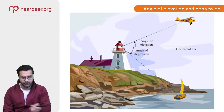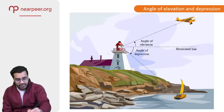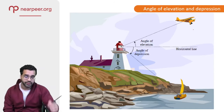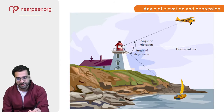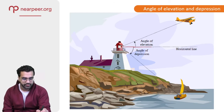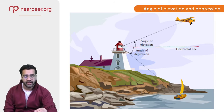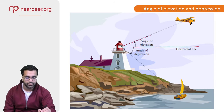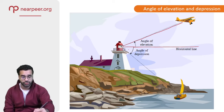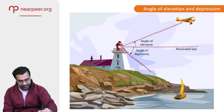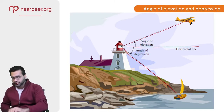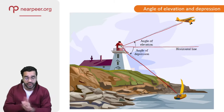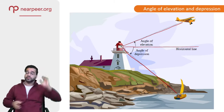One more example before I end this video: I have a tower, a plane above, and a boat below. If I'm standing at the top of the tower, my horizontal line of sight goes straight across. The angle I make looking up at the plane is my angle of elevation, and the angle I make looking down at the boat is the angle of depression. I hope this diagram summarizes it really well.